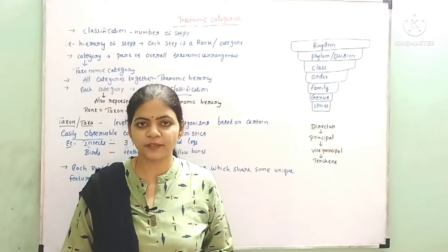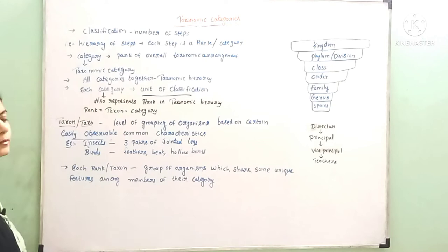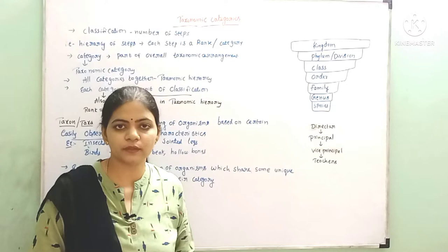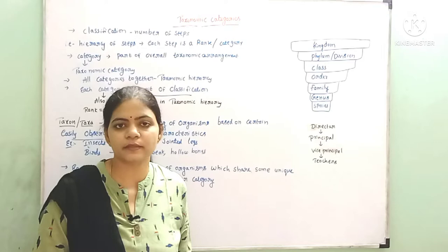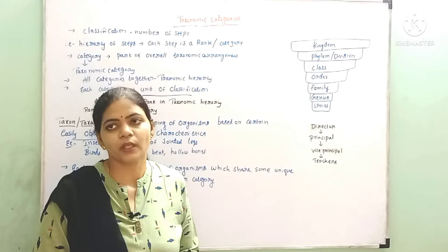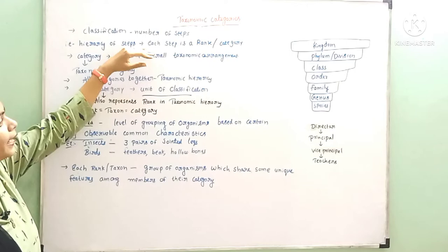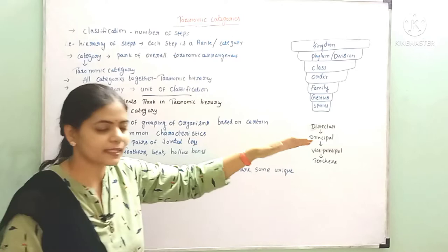Hello everyone, this is Lata Akula. In this video we are going to study about taxonomy categories. Classification of the living world — what is taxonomy and systematics — the classification of living organisms is not a single step process. It is not an easy process; it involves a number of steps. A hierarchy of steps is present, and each step is a rank or a category.